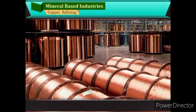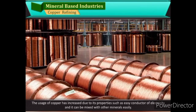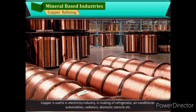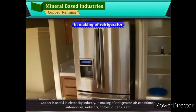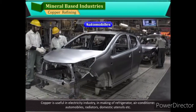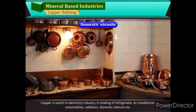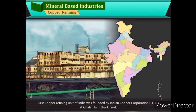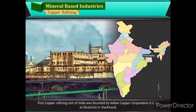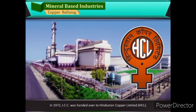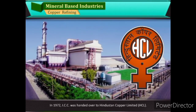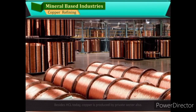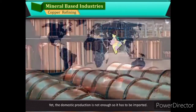Copper Refining: The usage of copper has increased due to its properties such as being an easy conductor of electricity and being easily mixed with other minerals. Copper is useful in the electricity industry and in making refrigerators, air conditioners, automobiles, radiators, and domestic utensils. The first copper refining unit of India was founded by the Indian Copper Corporation, ICC, at Ghatshila in Jharkhand. In 1972, ICC was handed over to Hindustan Copper Limited, HCL. Besides HCL, copper is also produced by the private sector today. Yet, domestic production is not enough, so it has to be imported.